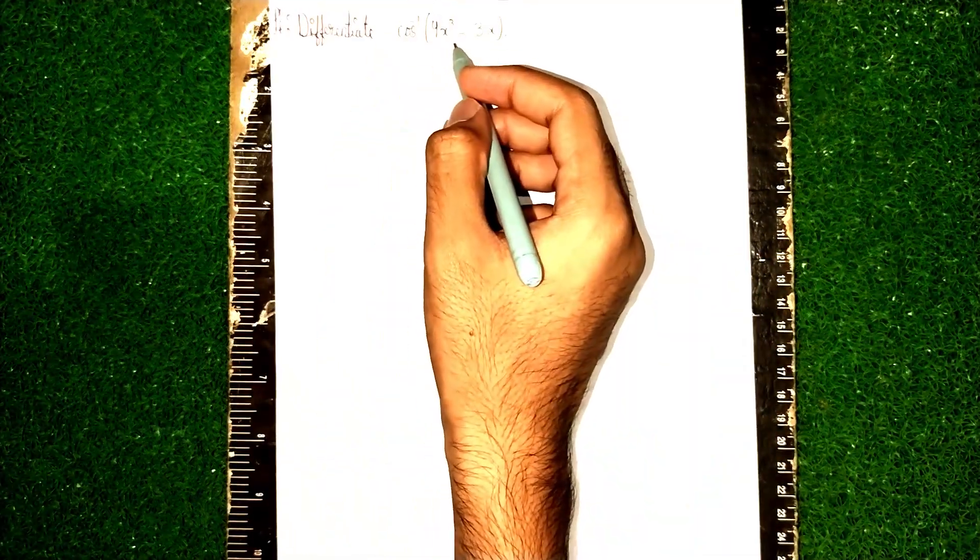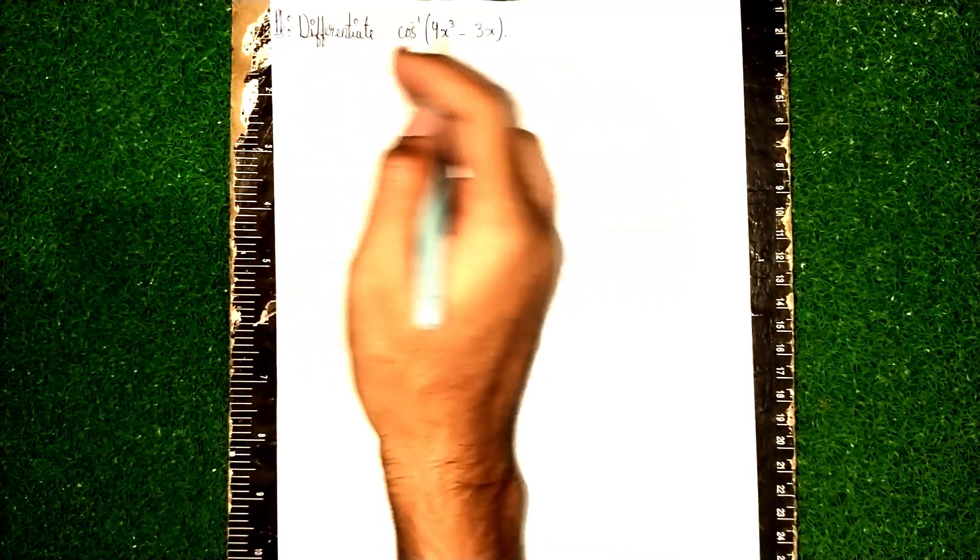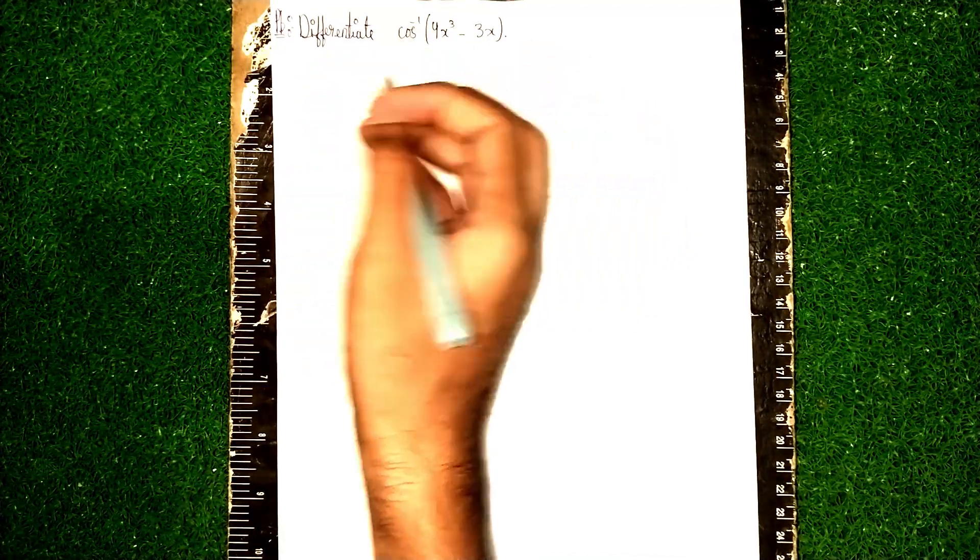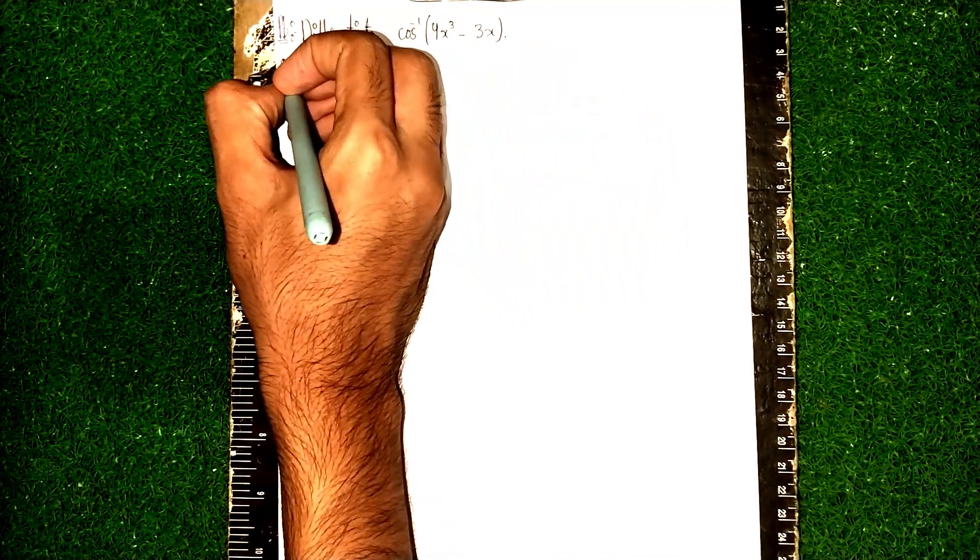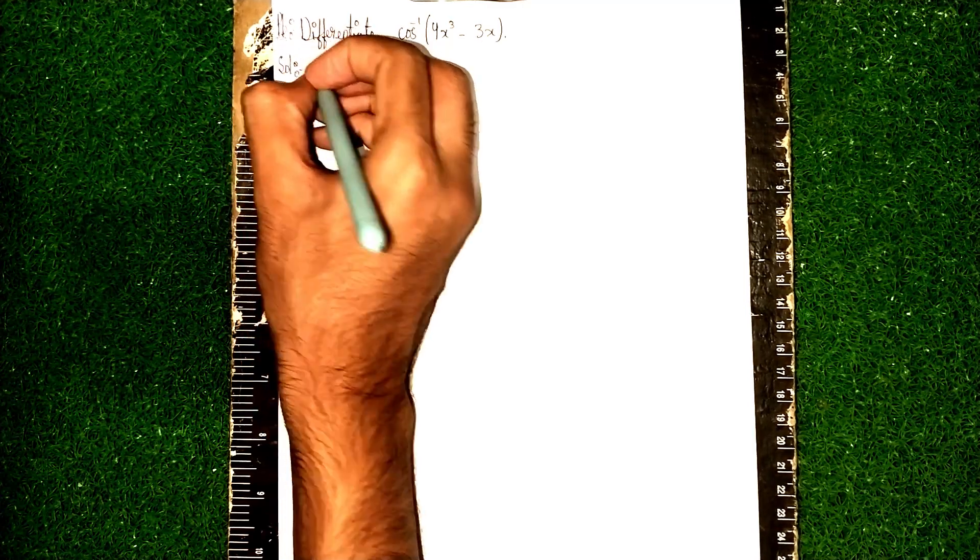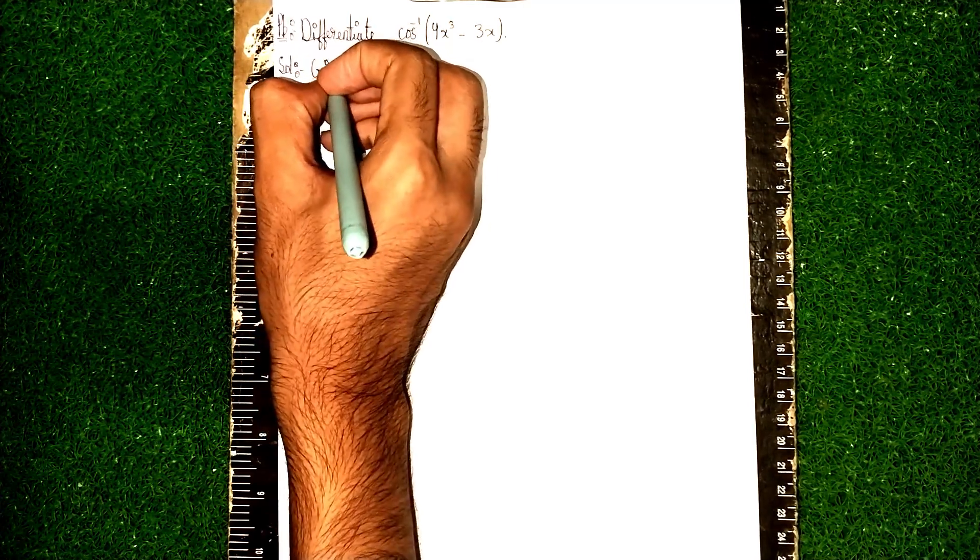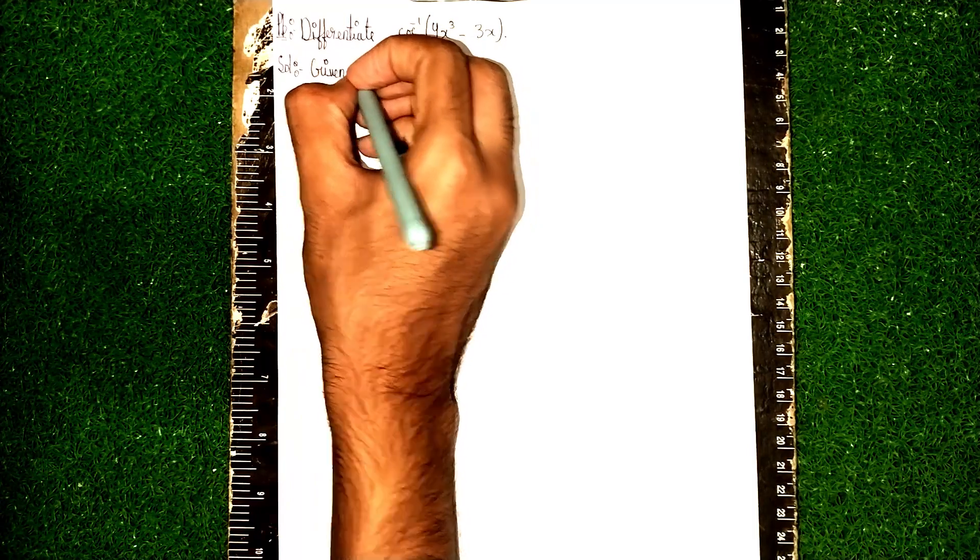Welcome back to my channel. Today's question: differentiate cos inverse of 4x cube minus 3x. So this is a differentiation question. First, write the solution. What is given here? Given is cos inverse of 4x³ - 3x.